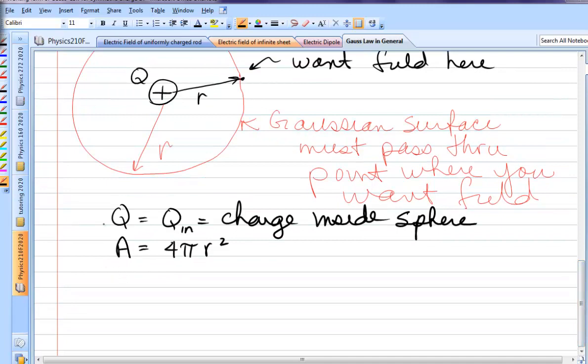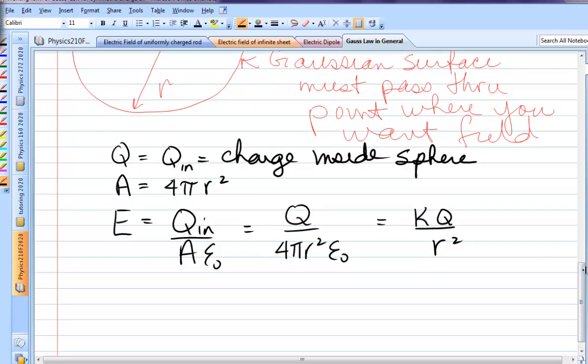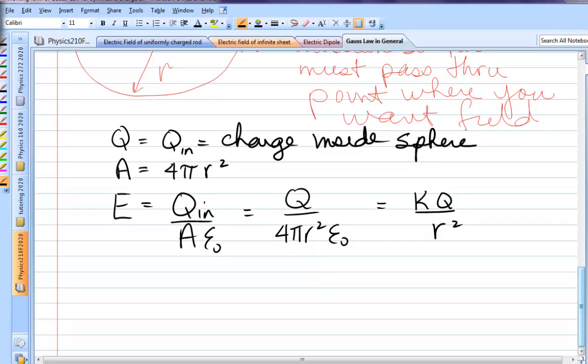Now, we go ahead and put the values into our formula. The working form of Gauss's law, Q_in over A epsilon naught. Q_in is everything inside, Q, area is 4 pi r squared, epsilon naught. And sure enough, there it is, KQ over r squared, which we already knew that that's the electric field due to a point charge. That is only the magnitude. As far as direction goes, you have to work that out yourself.